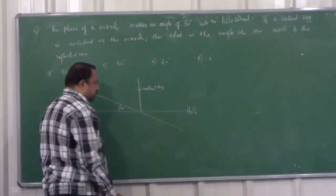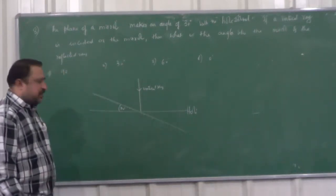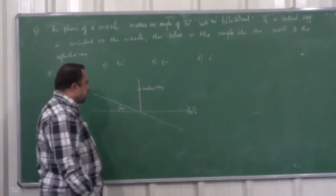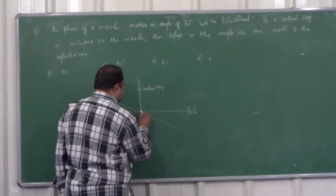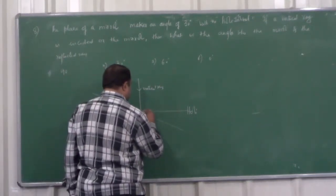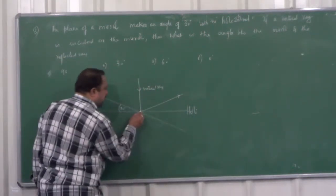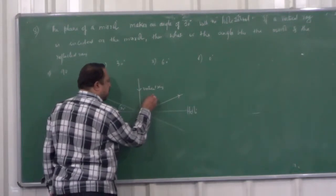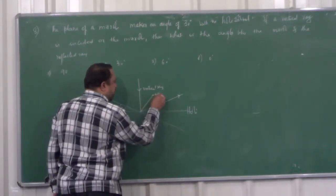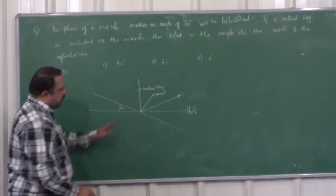60 degrees. Now, this is, let's say, this is the reflected ray. And this is the normal at the point of incidence. Normal to the mirror.